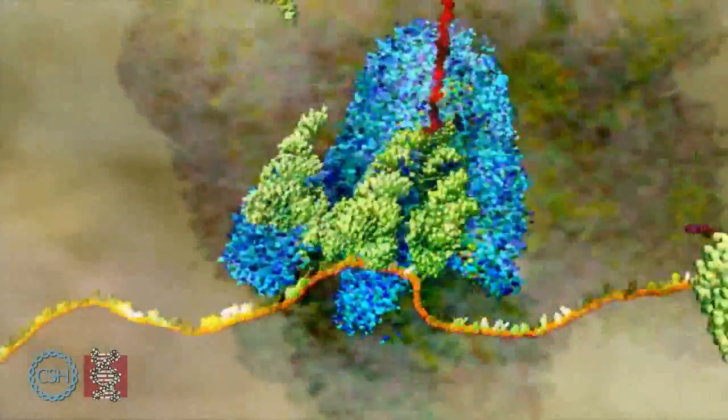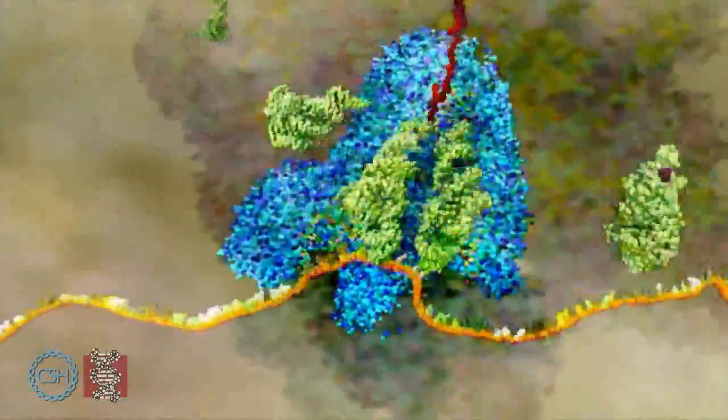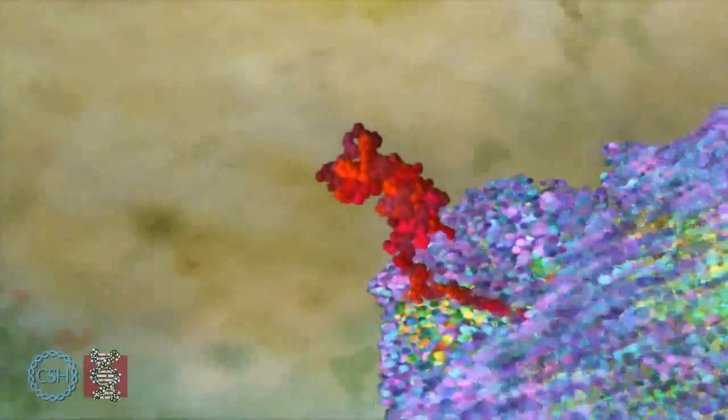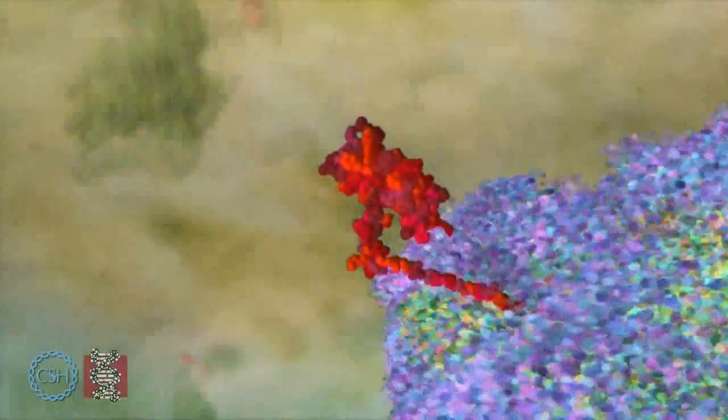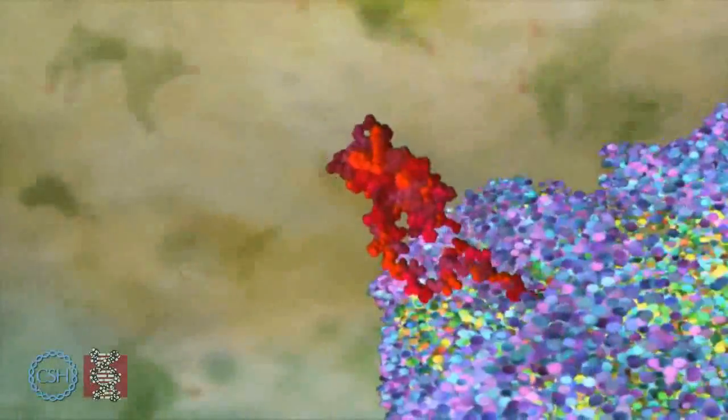There are different transfer molecules for each of the 20 amino acids shown as small red tips. The code for each amino acid is read off the RNA three letters at a time and matched to three corresponding letters on the transfer molecules. The amino acid is added to the growing protein chain and after a few seconds the protein starts to emerge from the ribosome.